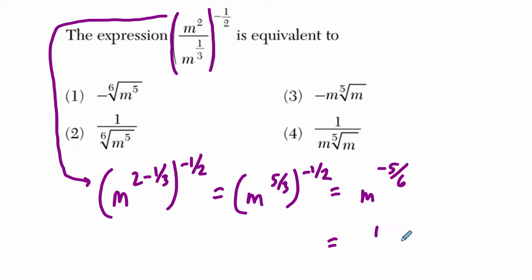That's going to be m to the negative five over six, which is equivalent to one over m to the five-sixth. Or that's the same thing as one over the sixth root of m, and m is being raised to the fifth power, which is choice two right here.